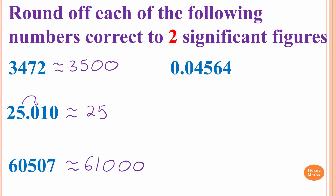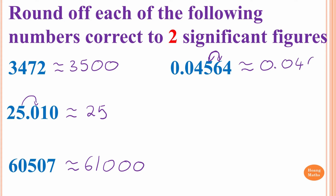0.04564: zeros in front of non-zero digits are not significant. So we only have 1, 2, 3, 4 significant figures. We want 2 significant figures, so we count this one and that one, giving us 0.045. Before writing 0.045, we check the number after 5, which is 6 — so we round up. Instead of 45, it becomes 46. The answer is 0.046. That is 2 significant figures.